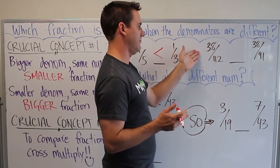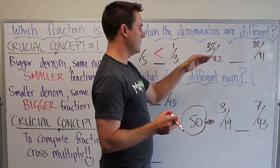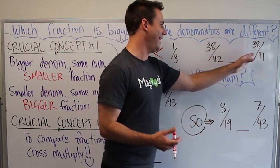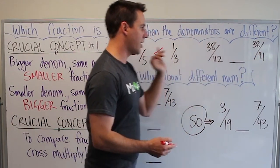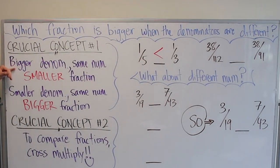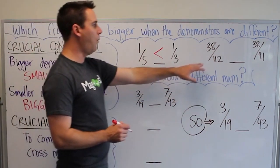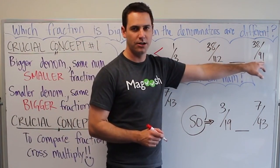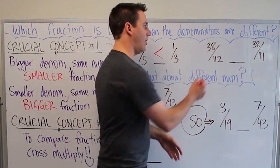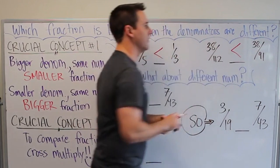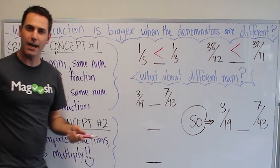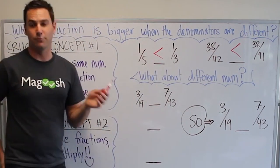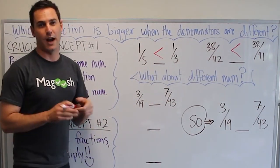Let's look at another fraction that might make it a little bit harder. We have 38/112 and 38/91. Same numerator on top. Our crucial concept says bigger denominator with the same numerator gives a smaller fraction, and smaller denominator gives a bigger fraction. So 112 is bigger than 91, meaning 38/112 is our smaller fraction, and the bigger fraction is 38/91.